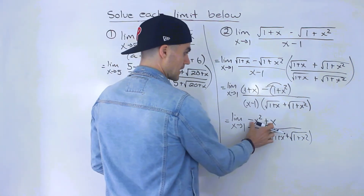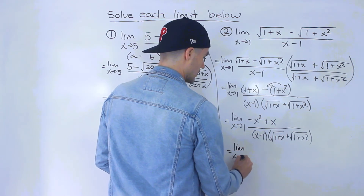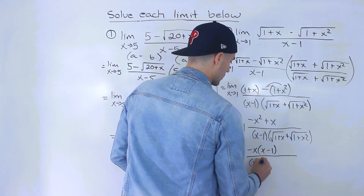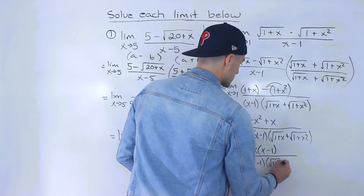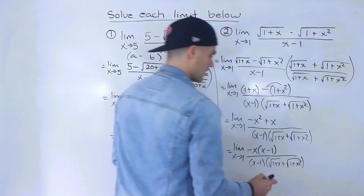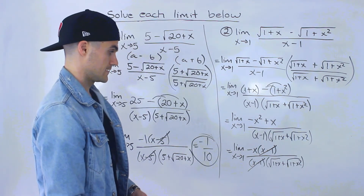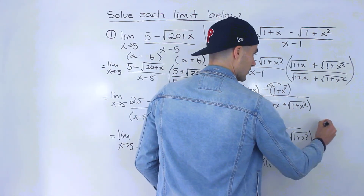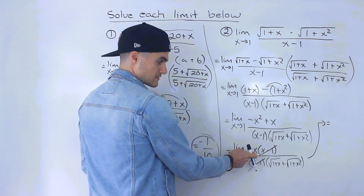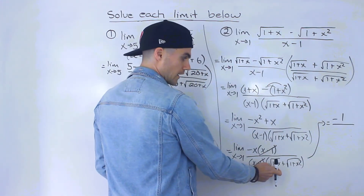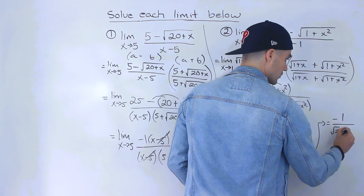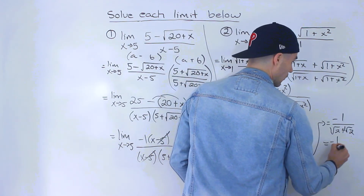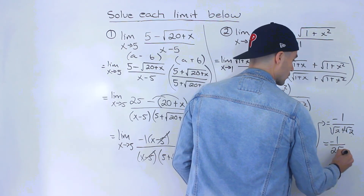We can factor out a negative x from the numerator. So we have the limit as x approaches 1 of negative x times (x minus 1), all over (x minus 1) times (root of 1 plus x plus root of 1 plus x squared). Those (x minus 1) terms cancel out. Now we substitute x equals 1: up top we have negative 1, and in the denominator we have root 2 plus root 2. Those are like terms, so we add the coefficients: we get negative 1 over 2 root 2.